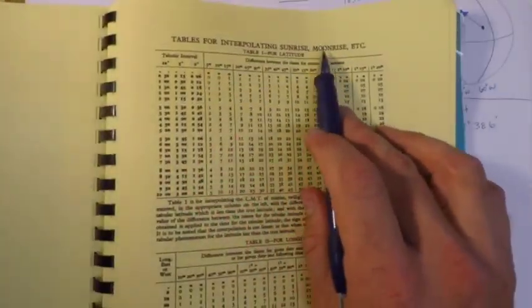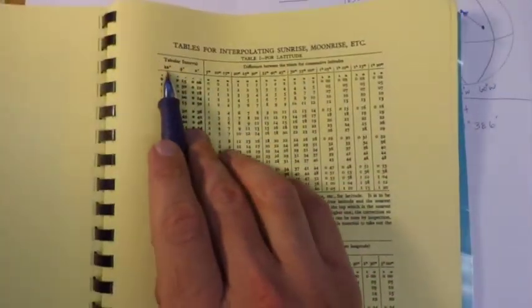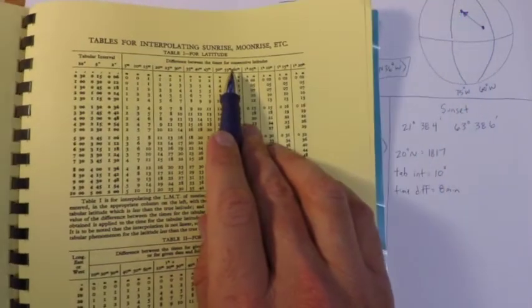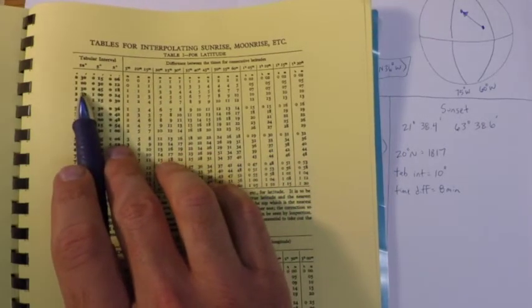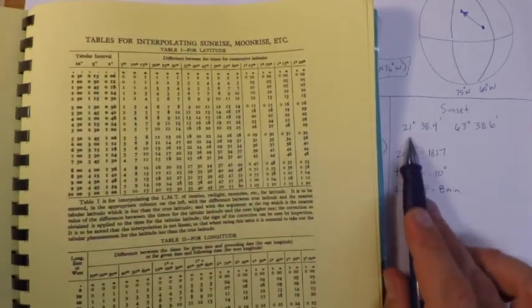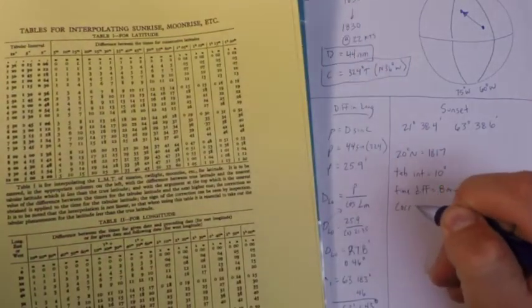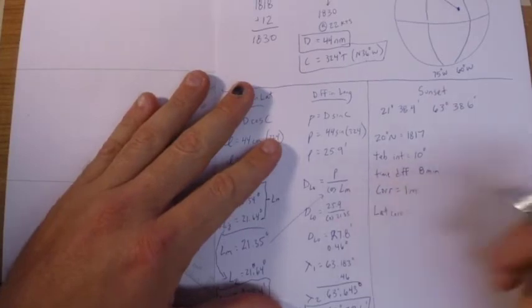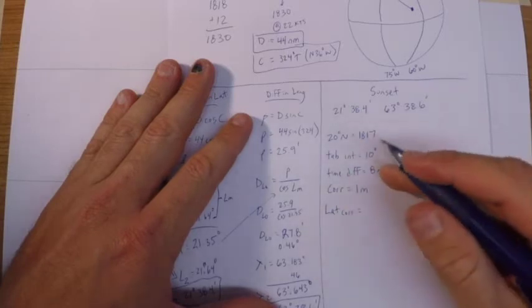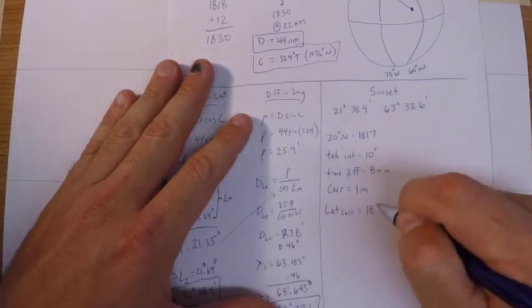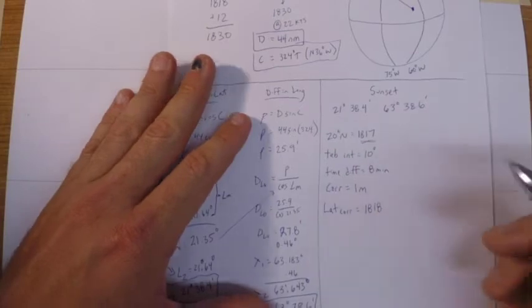Tables for interpolating sunrise, moonrise, etc. So our tabular interval was 10, our difference between the times for consecutive latitudes was 8, and so when I kind of do that all out, our difference from 20 to 21 is about 1.5. So we're going to end up with a correction of 1 minute in time there. So that means our latitude correction time is going to be about 1818. So we started at 1817, 1818.